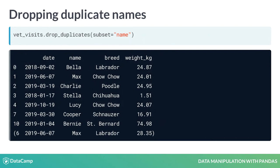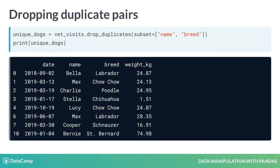We have Max the Chow Chow, but where did Max the Labrador go? Because we have two different dogs with the same name, we'll need to consider more than just name when dropping duplicates. Since Max and Max are different breeds, we could drop rows with pairs of name and breed listed earlier in the dataset. To base our duplicate dropping on multiple columns, we can pass a list of column names to the subset argument — in this case, name and breed. Now both Maxes have been included and we can start counting.